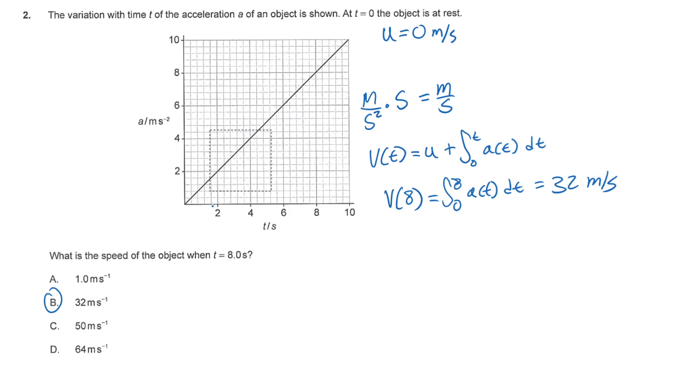Now, we could have just taken the integral, because acceleration as a function of time is equal to t. So if we do that, we have the integral from 0 to 8 of t dt. So we have t squared divided by 2 evaluated from 0 to 8, which will give us 8 squared divided by 2, which is also equal to 32 meters per second.